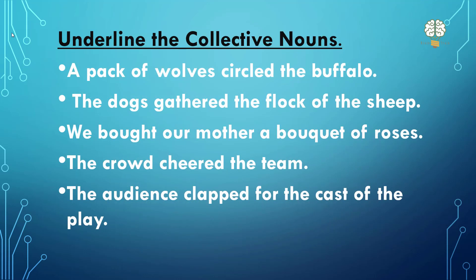Next. Now you have to underline the collective nouns. I'll read the sentences for you, so you get a sense of where and how they are used. A pack of wolves circled the buffalo. The dogs gathered the flock of sheep. We bought our mother a bouquet of roses. The crowd cheered the team. The audience clapped for the cast of the play. So again, pause your video, underline your answers, and write them in your notebook. Then check — were you right or not?